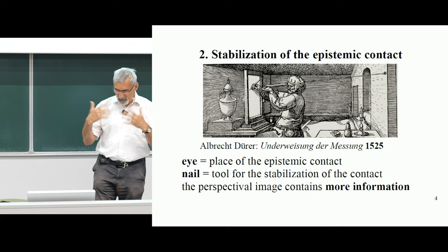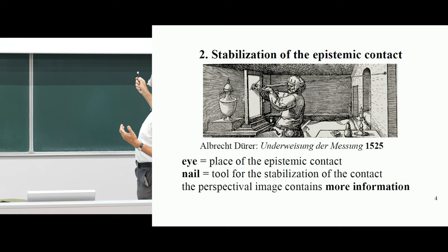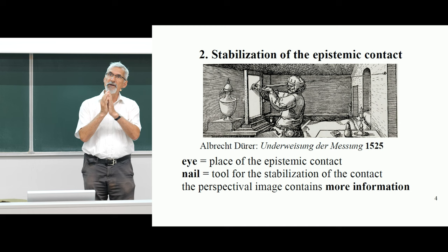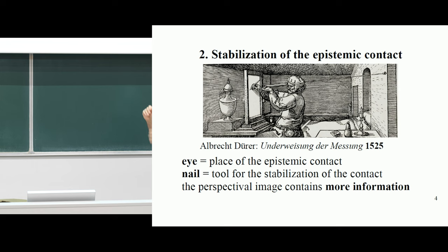The picture is constructed as if it would appear from this point of view — the center of projection. The perspective is constructed from a different point. This shows you the difference between the center or point of view from which the perspective is constructed, and the actual eye of the painter who is making the construction. So this is an example of stabilization of epistemic contact.